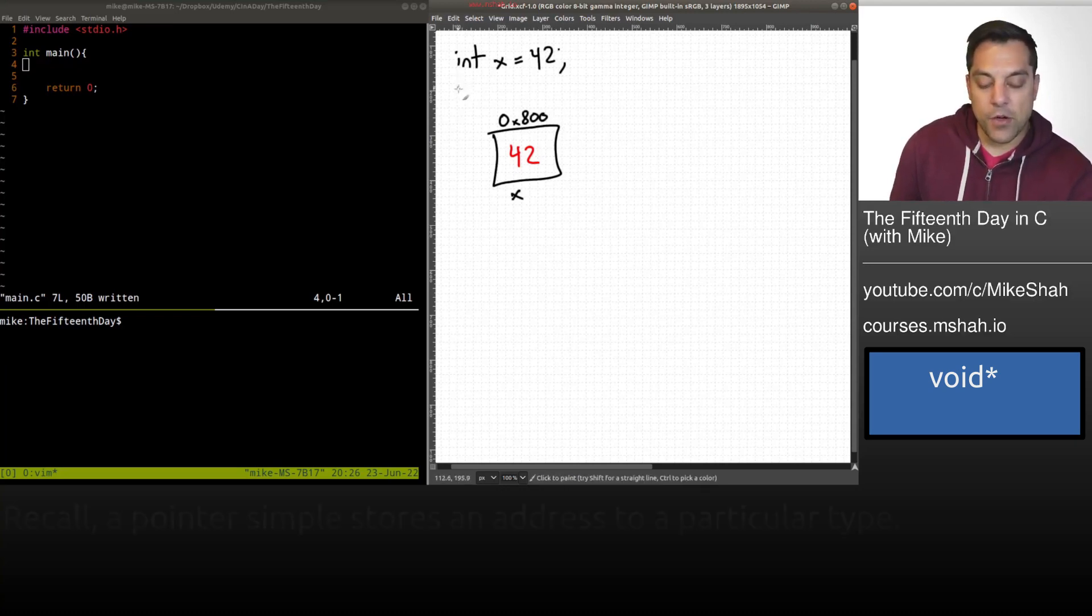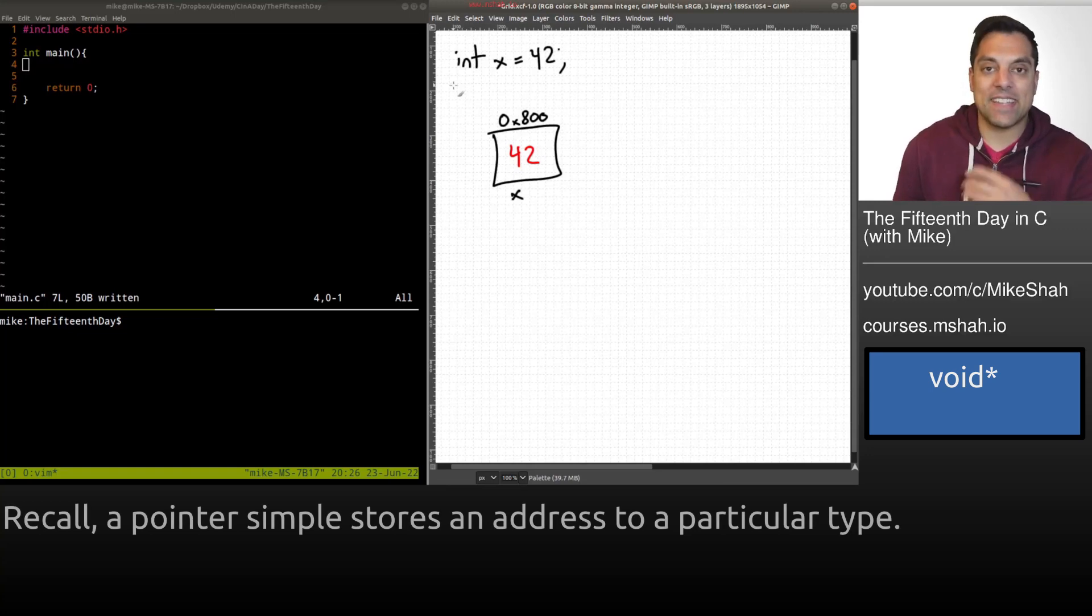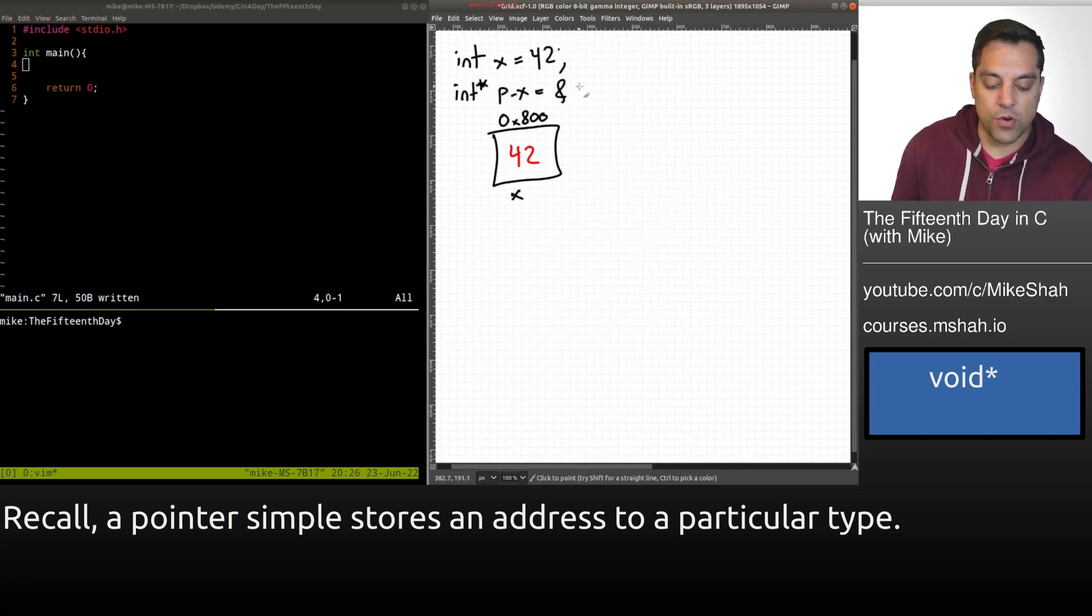And then later on in my code, I want to create a pointer. Typically we have a specific data type of things that we can point to. So for instance, int star p underscore x, and it's going to store the address of x here. So again, I'll create another box here. Here's p of x, it has its own address, maybe somewhere nearby.